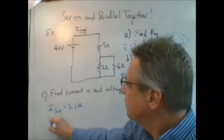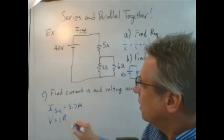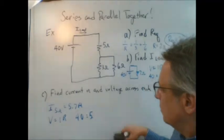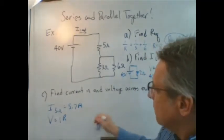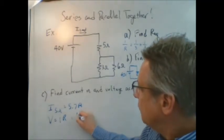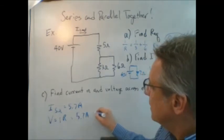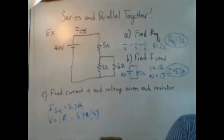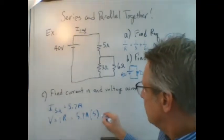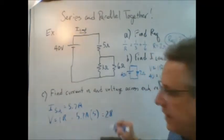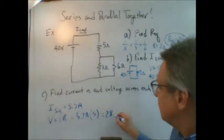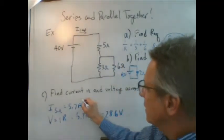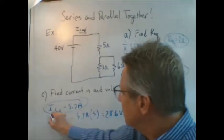And using V equals IR, if 5.7 amps is going through a five-ohm resistor, then there is 28.6 volts being dropped across that resistor. And so here are two of the answers to this last part.